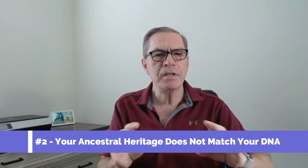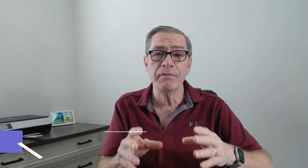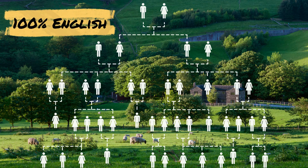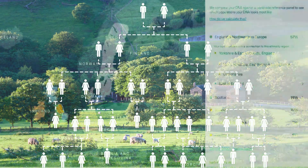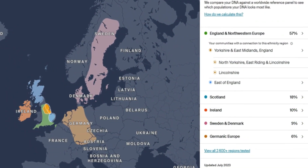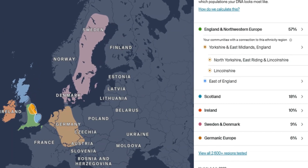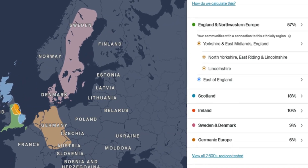Let's take a quick look at my DNA results. I have gone back to the 16th and 17th centuries on most of my ancestral lineage, and I have 100% English ancestral heritage. But according to my DNA, I'm only 57% English. Why am I not 100%? There are good reasons for this, which I'll discuss next.